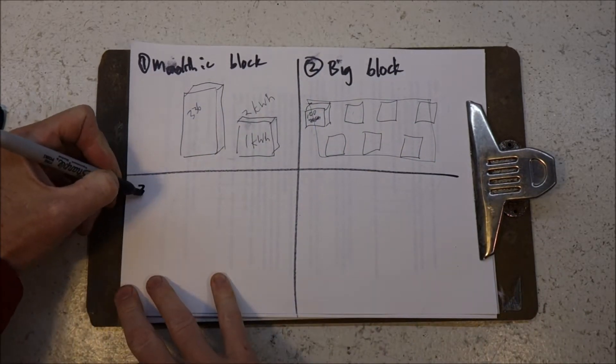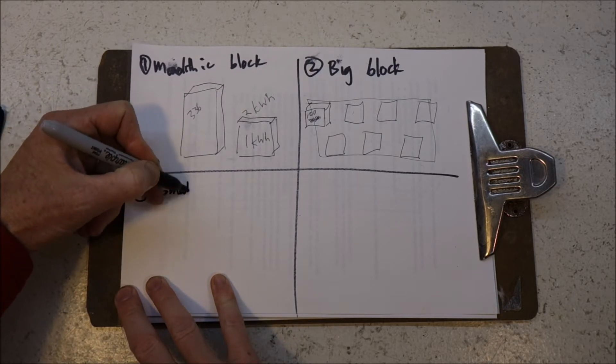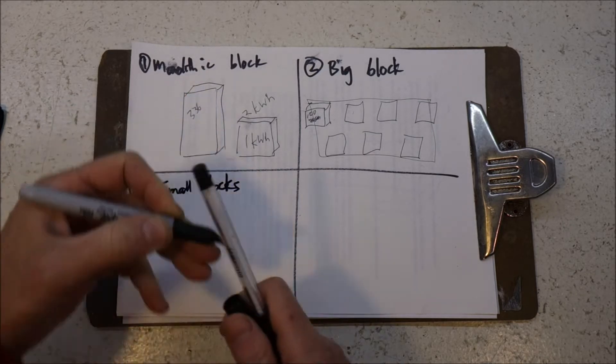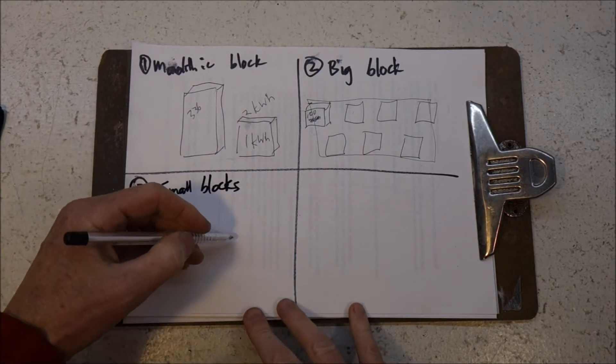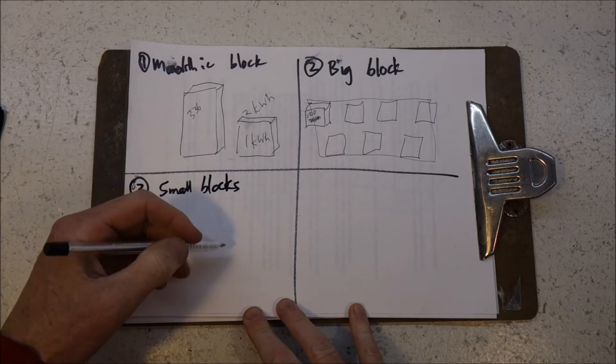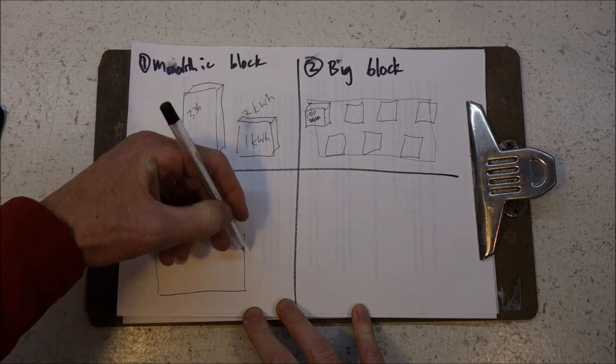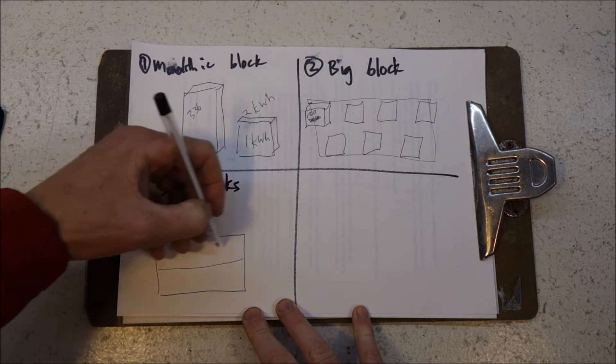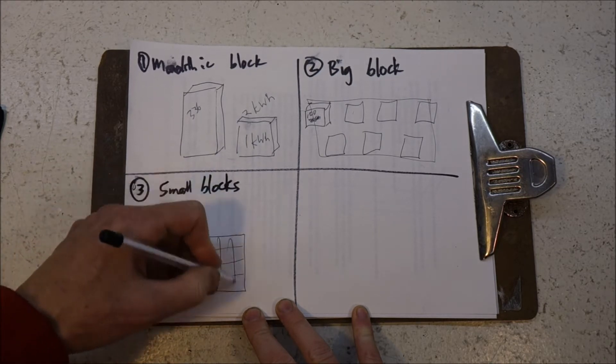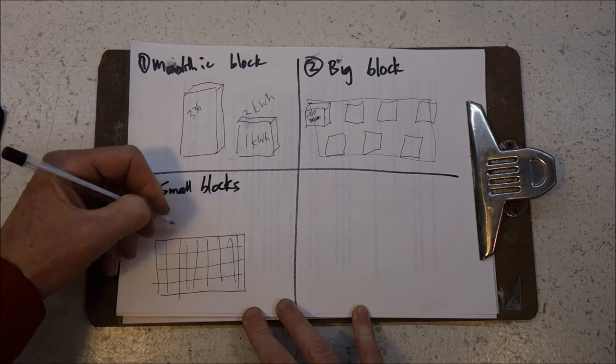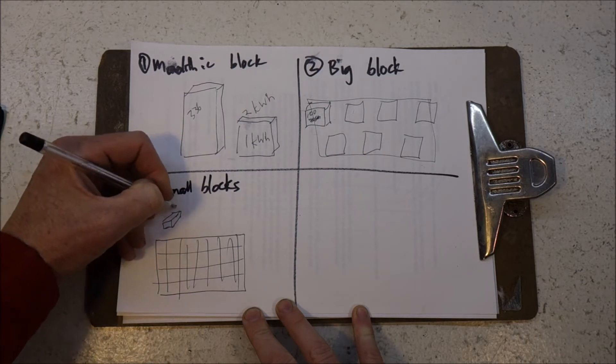The other system I've seen is what I call small blocks. That's what Chris Viril and his dad are doing with their 40 kilowatt hour pack. What they have is a shelving system where they've got oodles, just oodles and oodles, of small bricks of 36 cells.